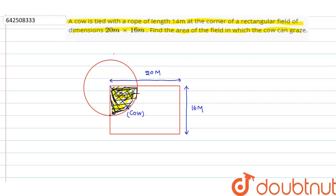It is given that the length of the rope is 14 meters, which is equal to the radius of the circle. Let's suppose it grazes in a circle of radius 14 meters.